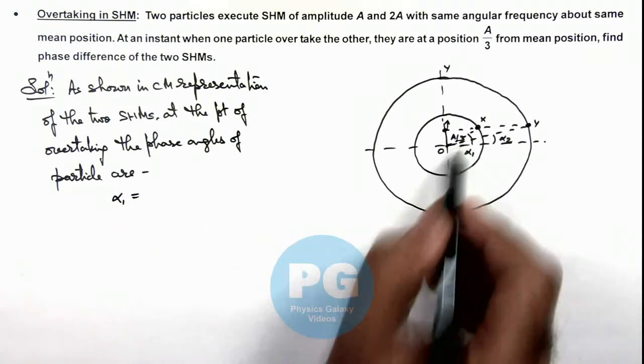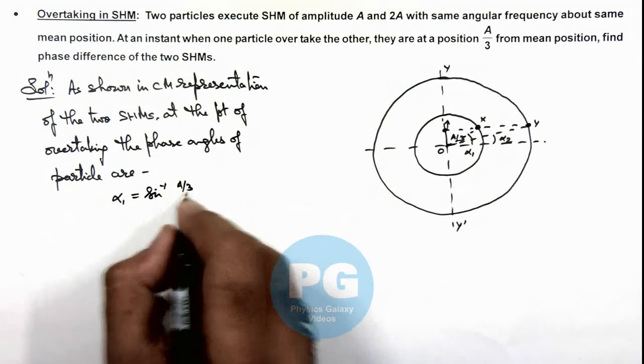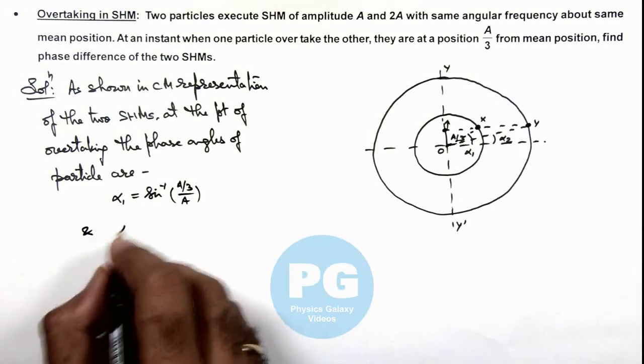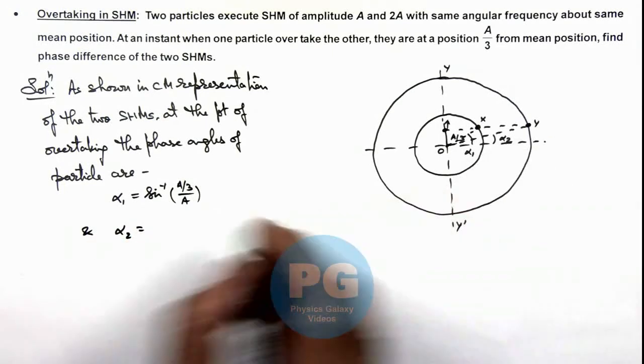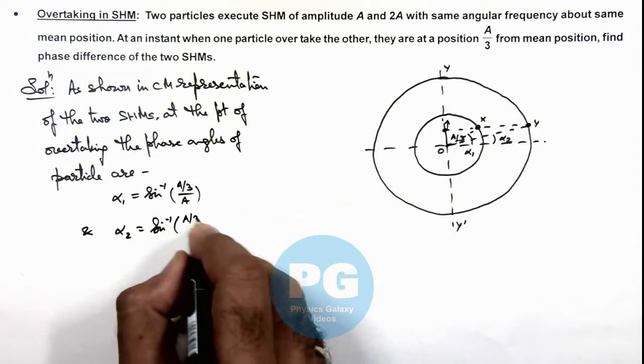And alpha 1 can be given as sine inverse of A/3 upon A, and alpha 2 for the particle Y it can be given as sine inverse of A/3 upon 2A.